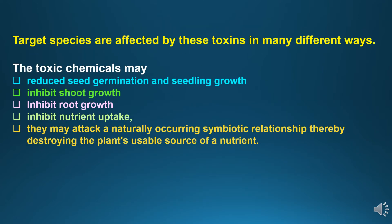Allelopathy does not form a direct aspect of crop-weed competition; rather, it causes crop-weed interference, which includes competition as well as possible allelopathy. The target species are affected by these toxins in many different ways: it may reduce seed germination, reduce seedling growth, inhibit shoot growth, inhibit root growth, cause inhibition of nutrient uptake, and may attack naturally occurring symbiotic relationships, thereby destroying the plant's usable source of nutrients.